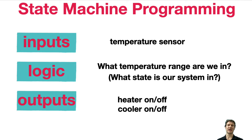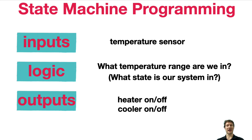The other thing we want to think about is the state machine programming we learned last time. We want to manage our inputs, think about outputs — what are we actually controlling? — and then what logic is relating those inputs to the outputs. Our input for this problem is a temperature sensor. The outputs are a heater that is either on or off and an indicator light that is red, blue, or green depending on the state. The logic is what we use to decide which of those states our system is in: above temperature, in range, or below.